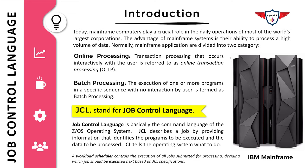JCL stands for Job Control Language. JCL is basically the command language of the z/OS operating system. It describes a job by providing information that identifies the program that needs to be executed and the data that needs to be processed. You can consider a job as a unit of work — for example, generating an annual report of failed transactions. JCL tells the operating system what needs to be done.